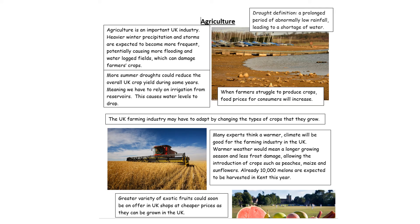Agriculture will be affected — during longer periods of drought, farmers struggle to produce crops, so food prices for consumers will increase. On the positive side, more exotic fruits such as melons can be grown more easily in the south, and the UK wine-producing industry has grown due to the hotter, drier conditions we are now experiencing.